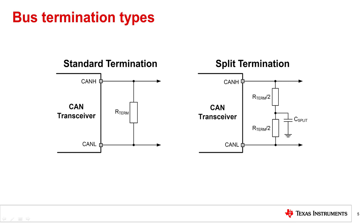CAN's bus topology with twisted pair cabling usually has a 120-ohm termination resistor. Since CAN networks connect CAN-H and CAN-L to power sources like VCC and ground, the power ratings of the termination resistors should take into account the short-circuit current protection of the CAN transceivers in the network.